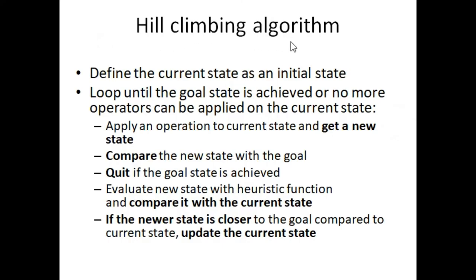Let's discuss the hill climbing algorithm again. First, define the current state as an initial state. Second, loop until the goal state is achieved or no more operators can be applied on the current state. There are two conditions to terminate this algorithm: if we achieve our goal state, or if we cannot apply any operators on a state. Apply an operator to the current state and get a new state. Compare the new state with the goal — quit if the goal state is achieved. Evaluate the new state with the heuristic function.